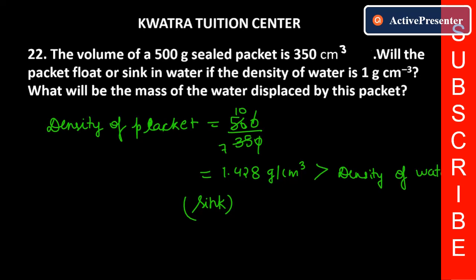Now they have asked us to find the mass of water displaced by the packet. So how do we find mass? Mass is the formula of volume into density of water. So mass equals volume of water displaced times density of water. Now how much volume of water will be displaced? This is displaced water volume. So it will be 350 centimeter cube.